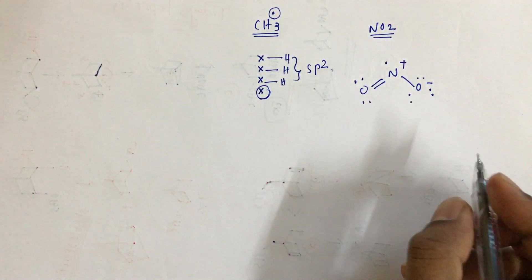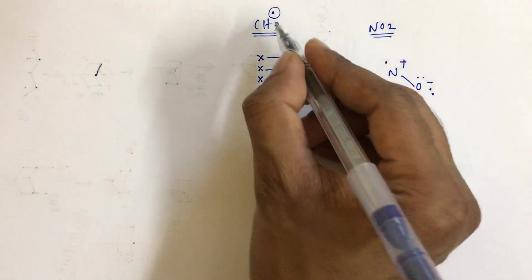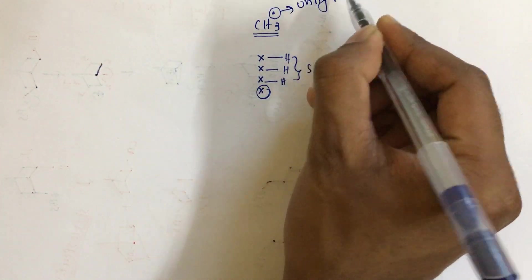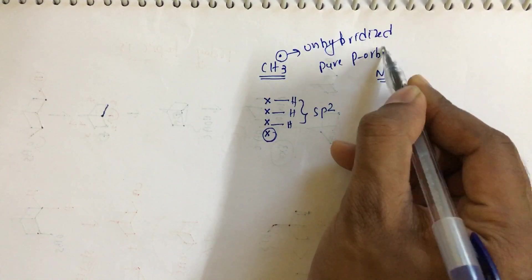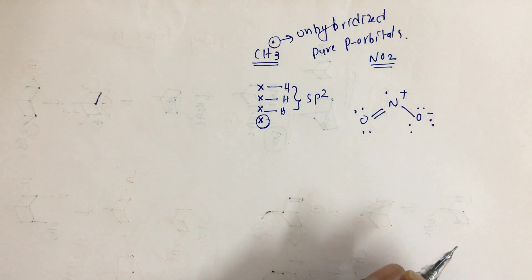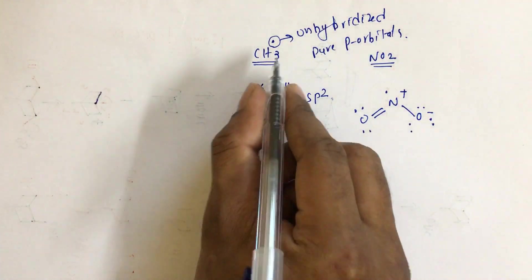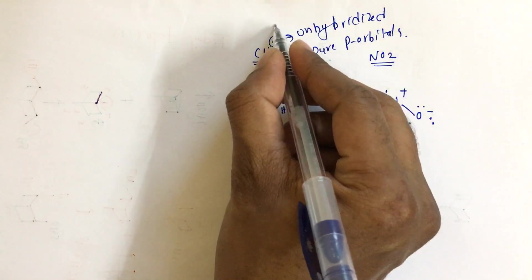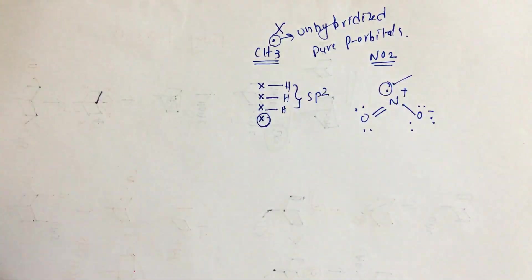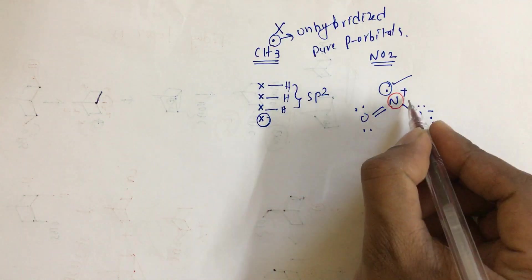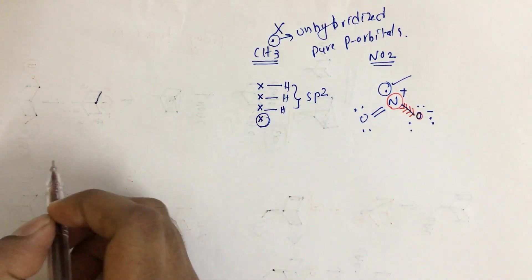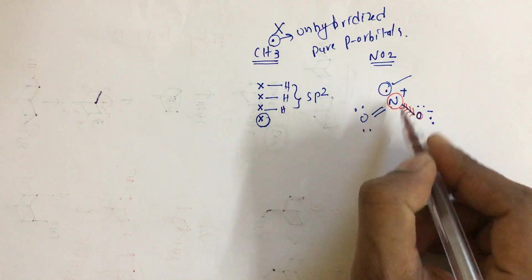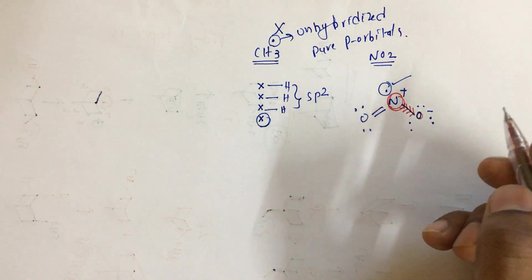In NO2 there is one single odd electron, which we can call an unhybridized pure p orbital. The key difference between the methyl radical and NO2 is that in NO2 the odd electron is involved in hybridization. This happens because the central atom is attached to a more electronegative atom, which pulls electron density away from the central atom.